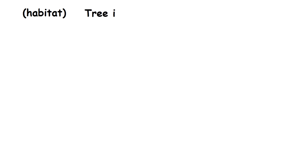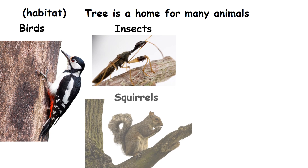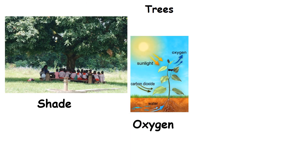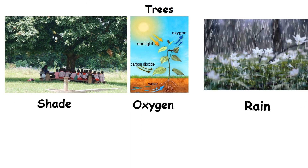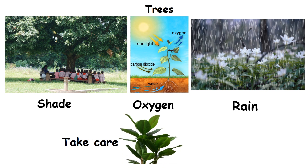Tree as a habitat. The tree is a home for many small animals such as birds, insects, squirrels and monkeys. Trees give us shade, oxygen and rain. We should always care for the plants as plants support all life in the world.